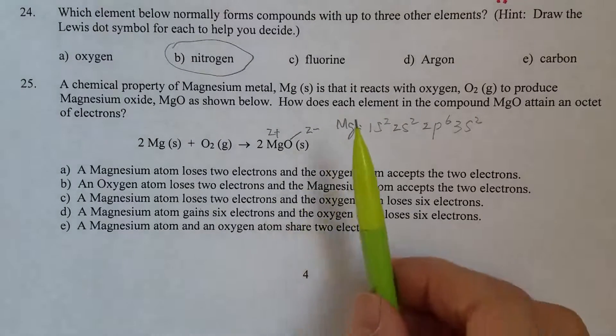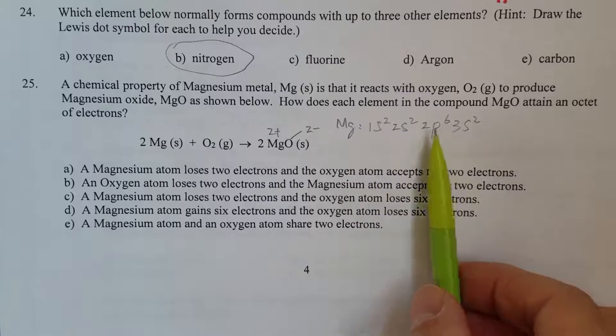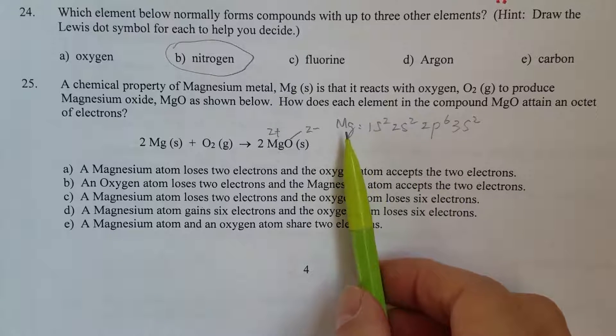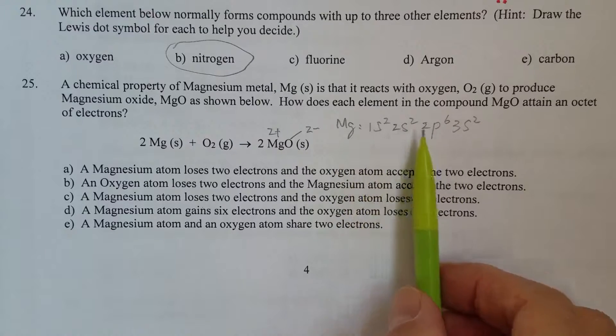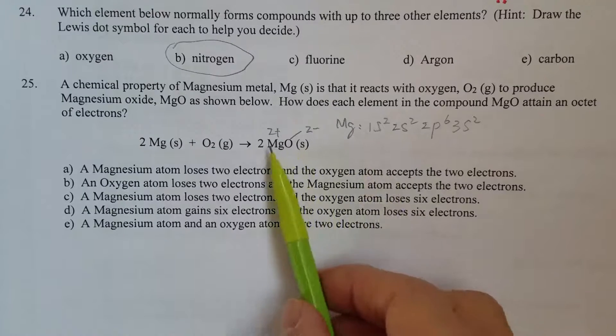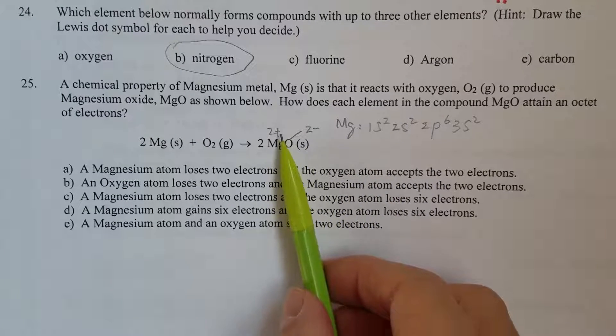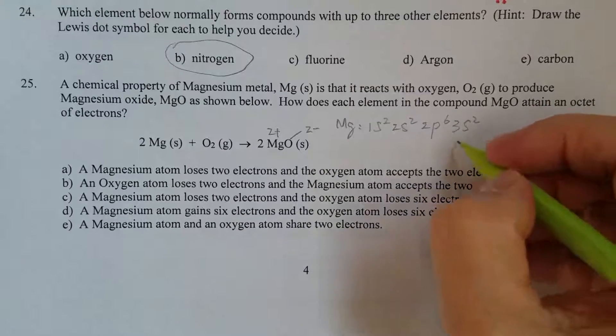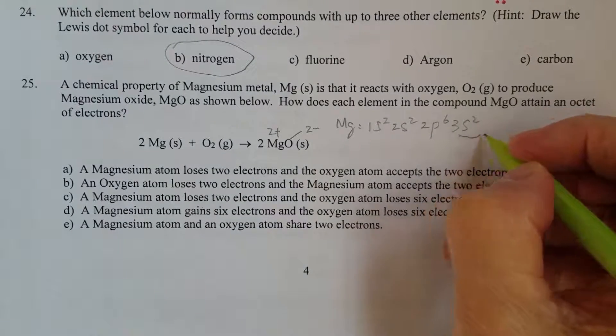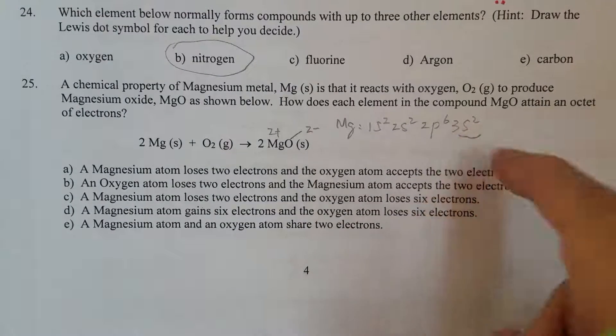So now we can write down the full electron configuration for magnesium, just the atom. And magnesium 2+, it lost two of the valence electrons. So right here...